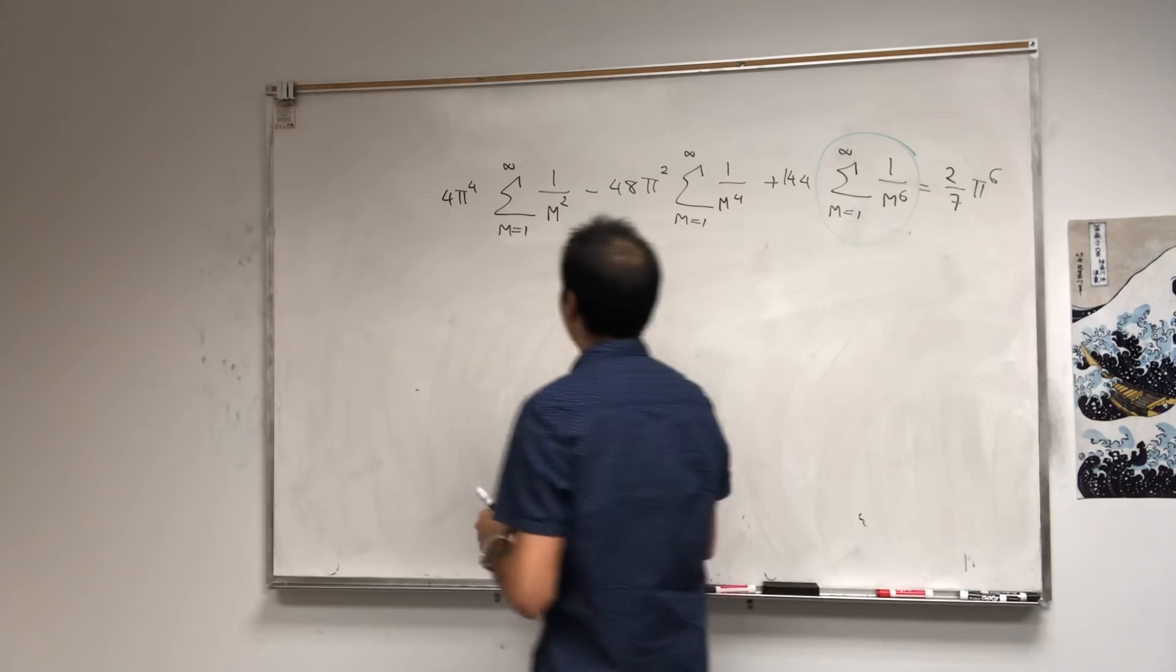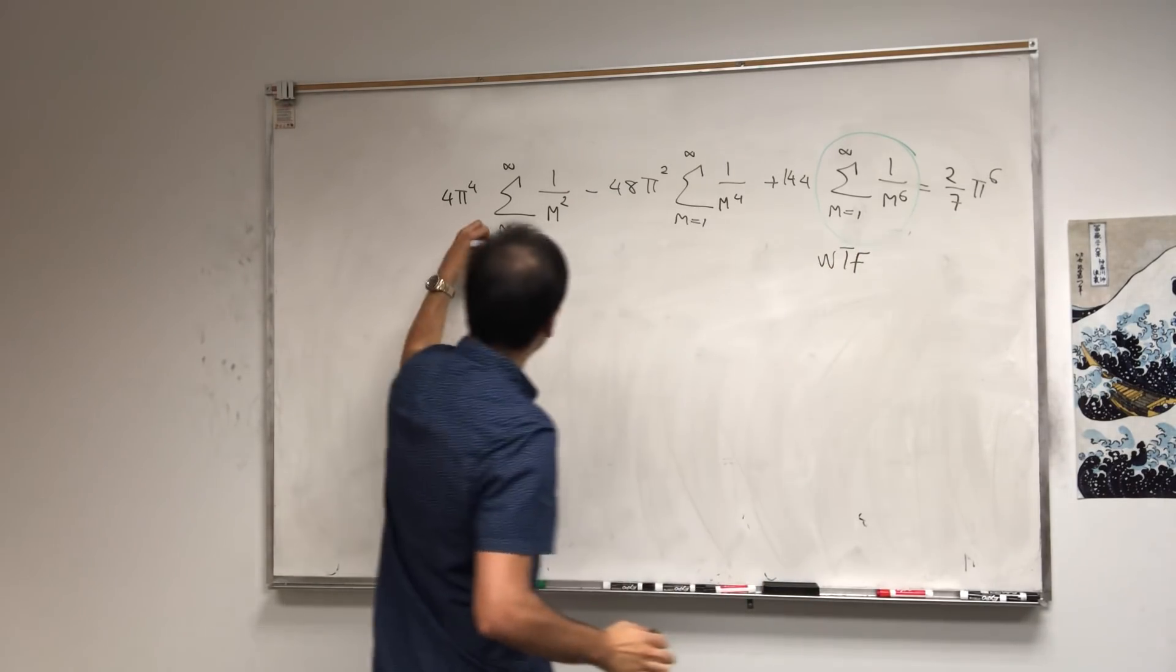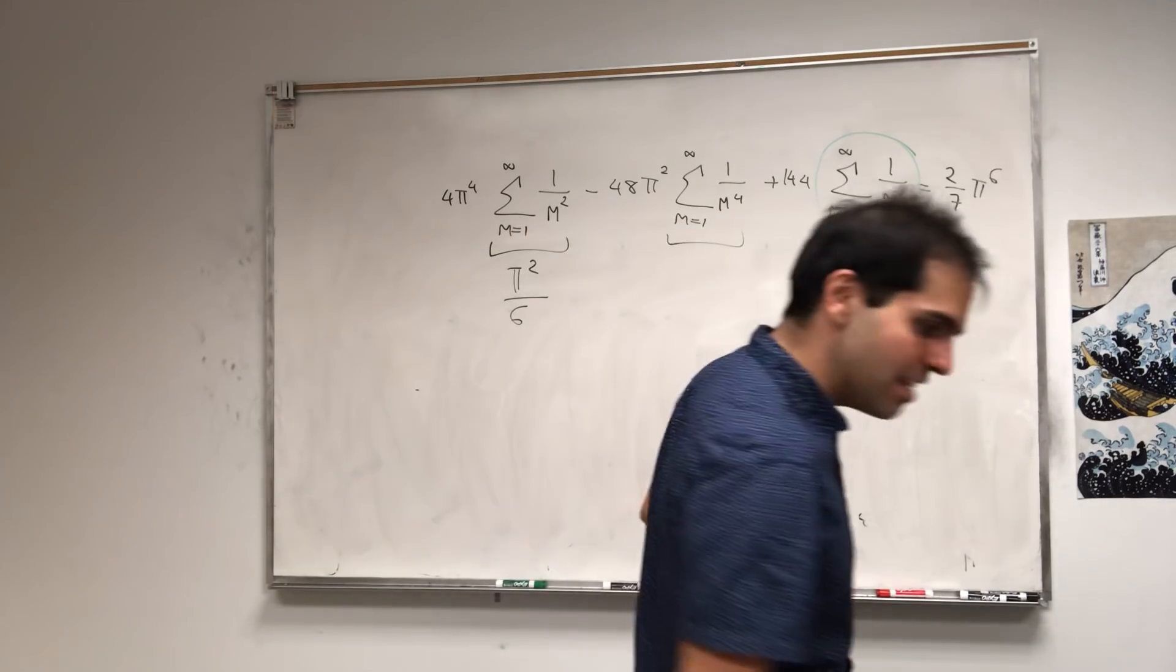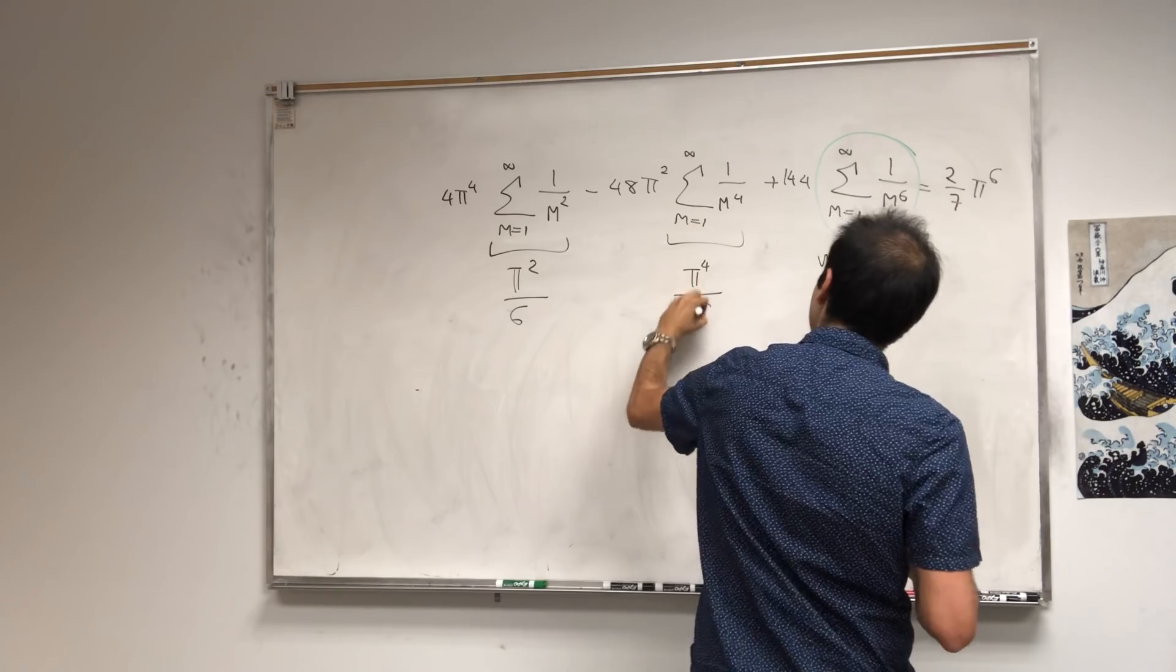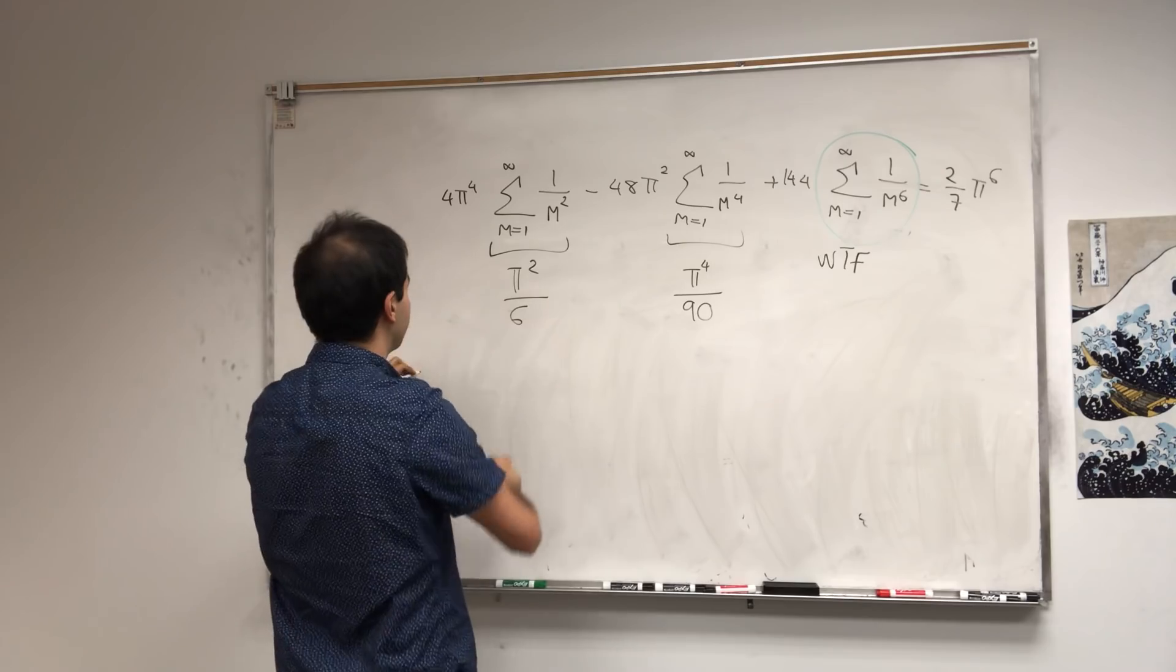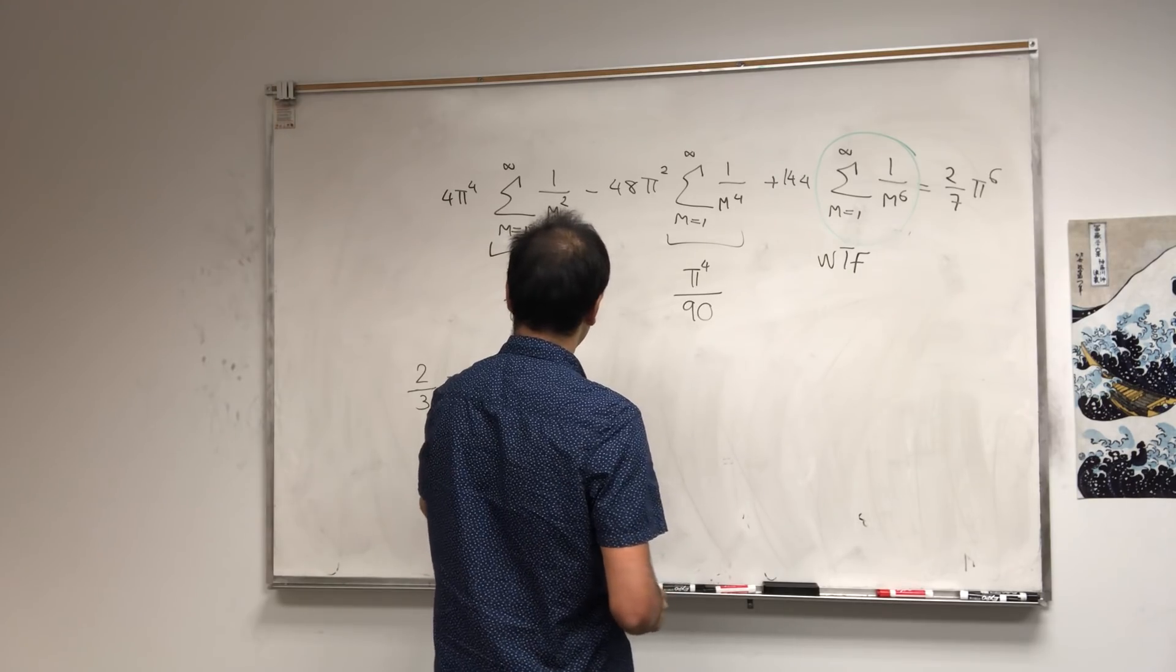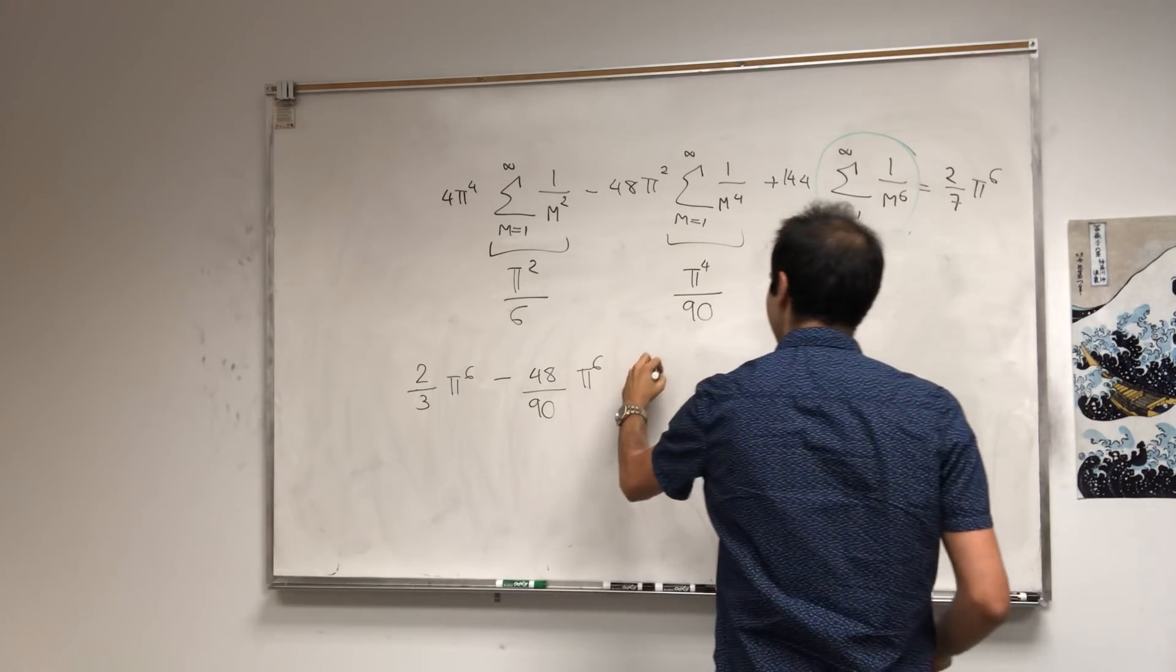So that's what we want to find. This one I've done in a previous video, that's pi squared over 6. This one, I think blackpenredpen has done in a video, I think it's pi to the 4th over 90. And so combining, we get 2 3rds pi to the 6th minus 48 over 90 pi to the 6th. You notice how it beautifully balances out.